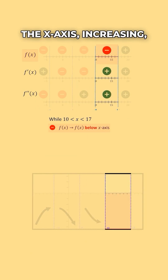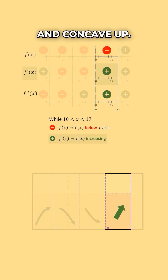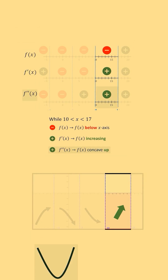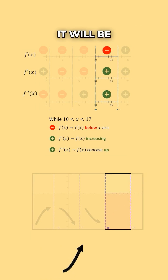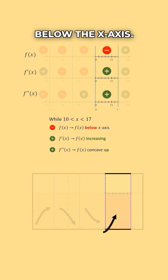When x is between positive 10 and 17, our function will be below the x-axis, increasing, and concave up. Increasing and concave up gives us this shape, and it will be below the x-axis.